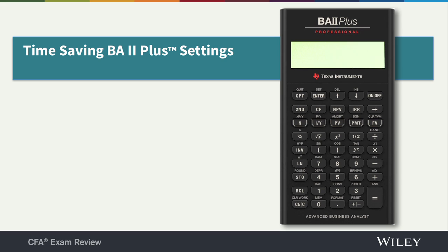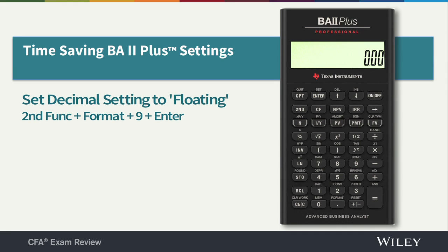Here's my calculator straight out of the box. I'll switch it on — notice I've got two places after the decimal. I'm going to show you how to change the format features so they're optimized for the CFA program. These are the two things you should do before you even start using your calculator for CFA calculations. I'm going to go into the format function by hitting Second Function Format. Notice the default number of decimal places is two — that's not ideal for the CFA program.